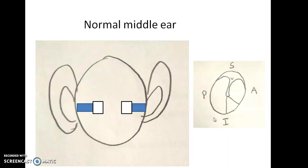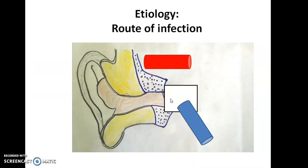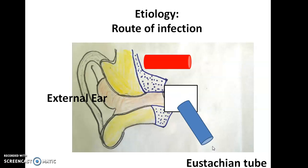This is a normal middle ear and normal tympanic membrane. The route of infection to the middle ear can come from outside via the external ear — if there is a perforation in the tympanic membrane or a foreign body, it can directly enter the middle ear cavity. More often than not, it comes via the Eustachian tube, that is via the nasopharynx side. If there is tonsillitis or adenoids, the infection can travel through the Eustachian tube.